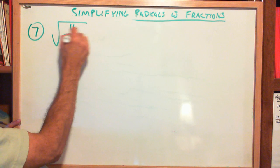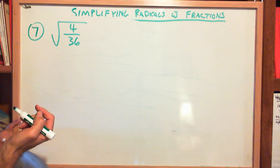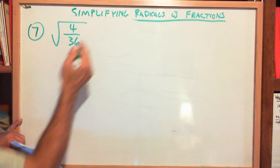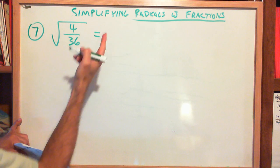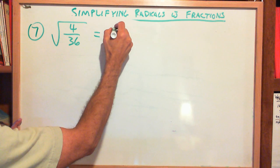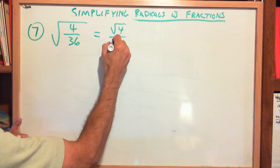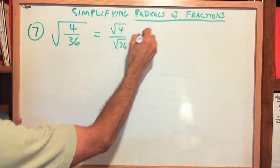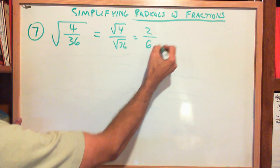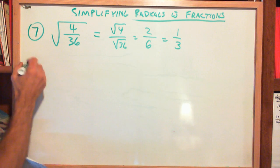Let's look at another type. Square root of 4 over 36: both 4 and 36 are perfect squares. So square root of 4 over the square root of 36 equals 2 over 6, which equals 1 third.